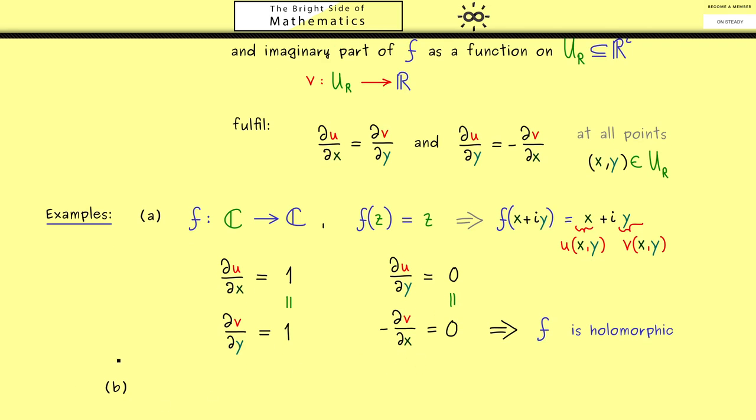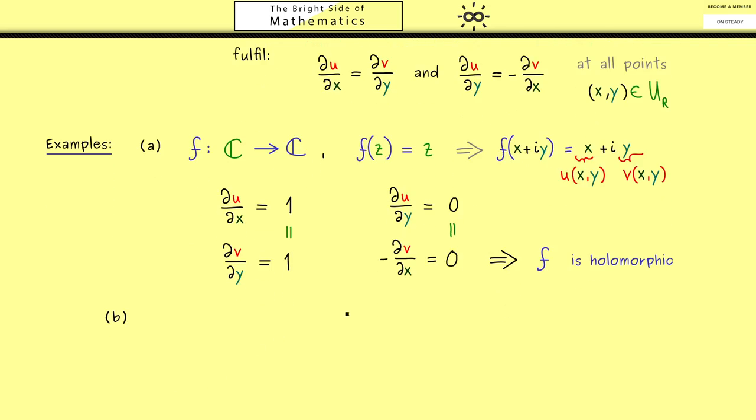Therefore, I would say in the next example let's look at a function where we already know that it is not holomorphic. Indeed, this was simply the complex conjugation, so f is z̄. Now as before, in order to apply the Cauchy-Riemann equations we have to rewrite that with x and y. Of course, this is not so complicated; the imaginary part just gets a minus sign. And then as before, the real part is u and the imaginary part here is v.